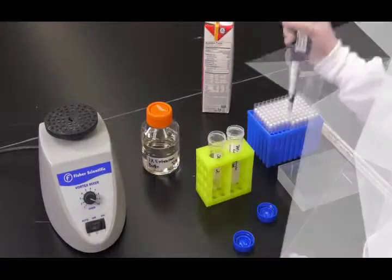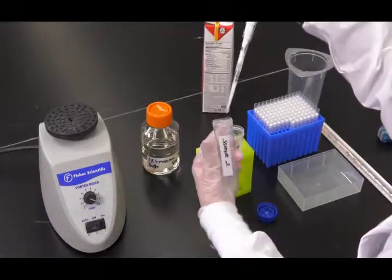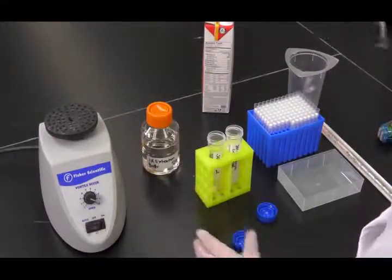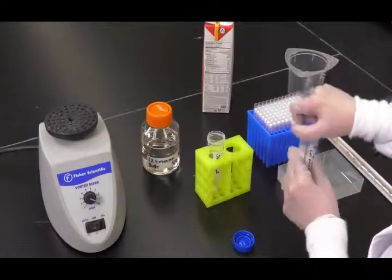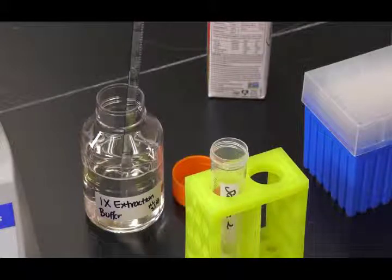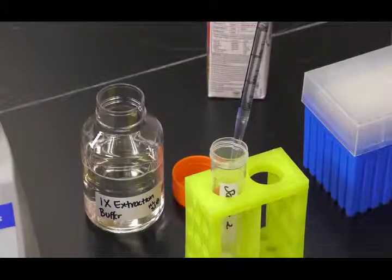For liquid foods or clean-in-place CIP final rinse water, use a sample size of 0.5 milliliters plus or minus 0.01 milliliters. And dilute with 4.5 milliliters of pre-warmed 3M extraction buffer and mix thoroughly.